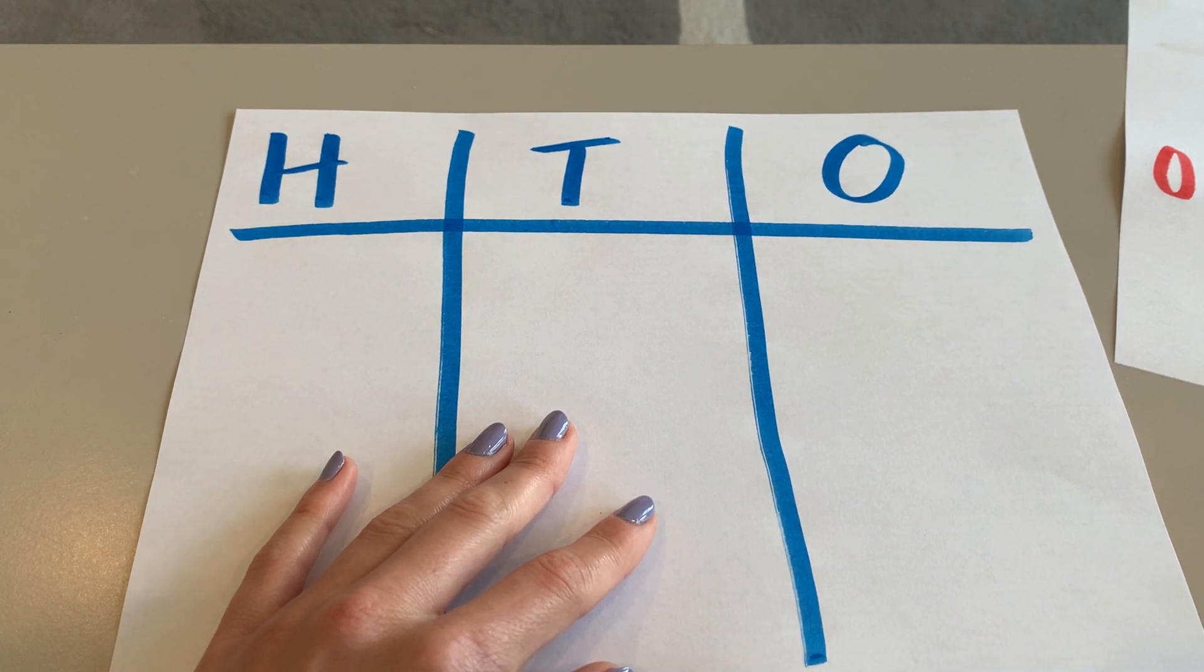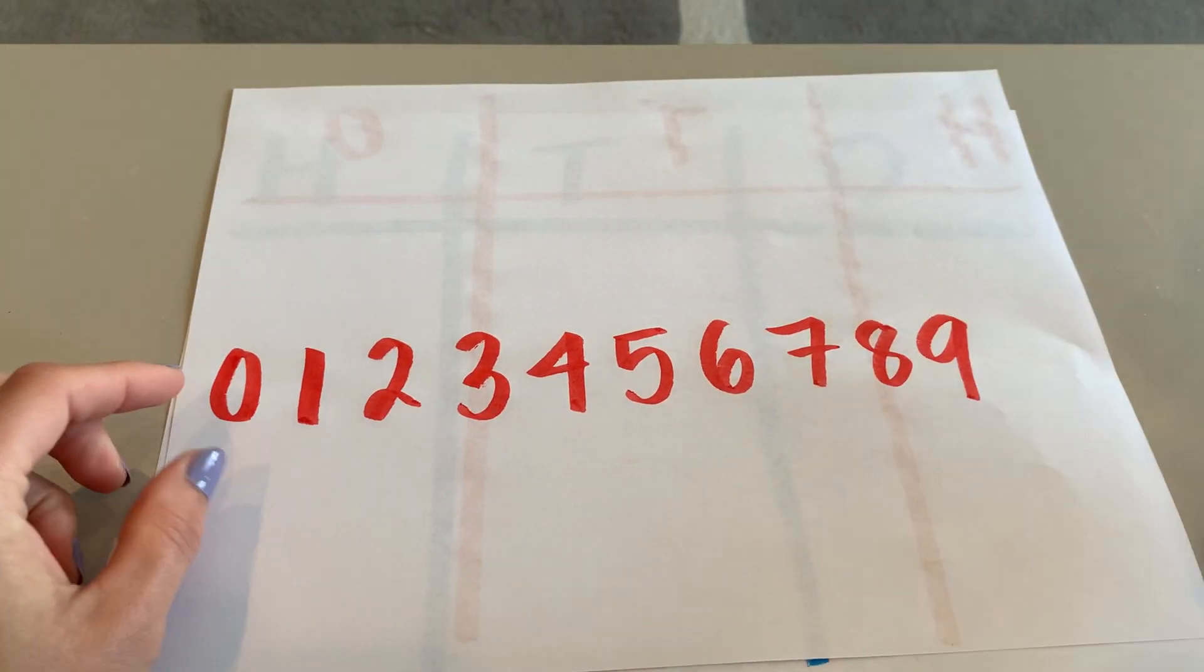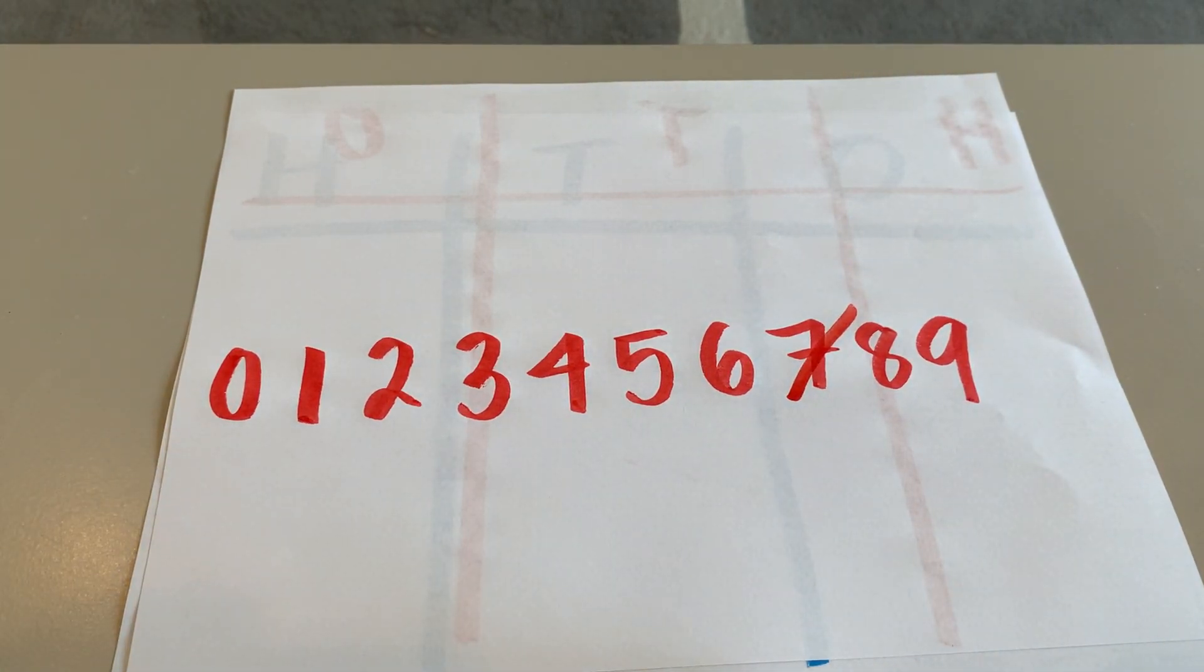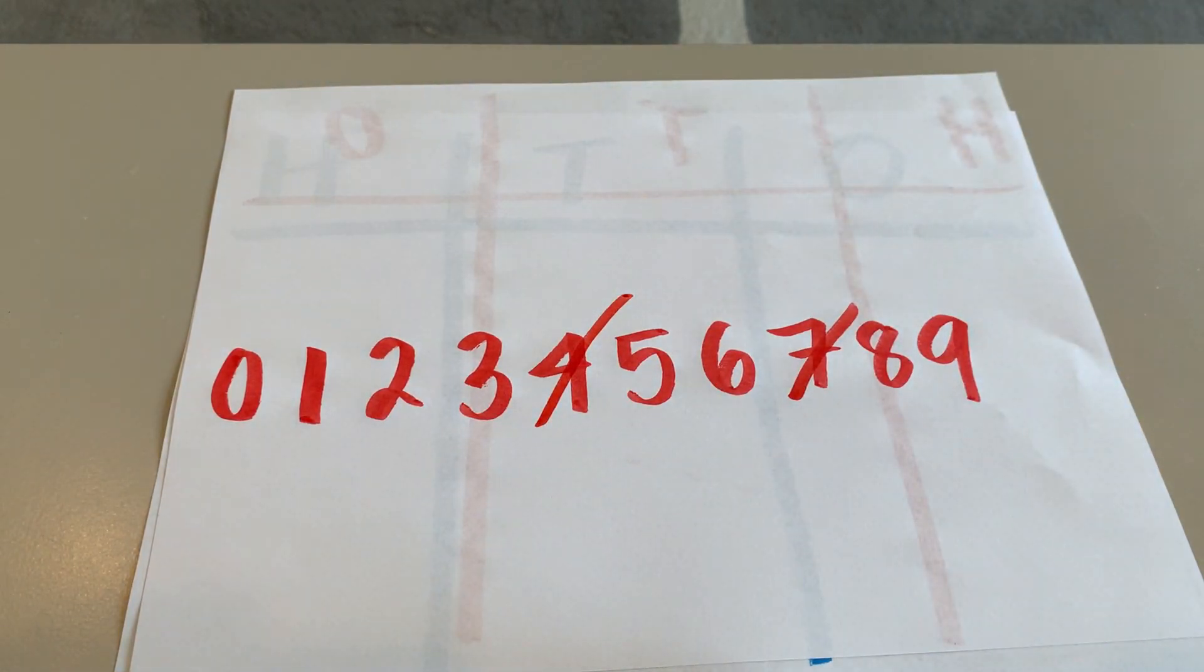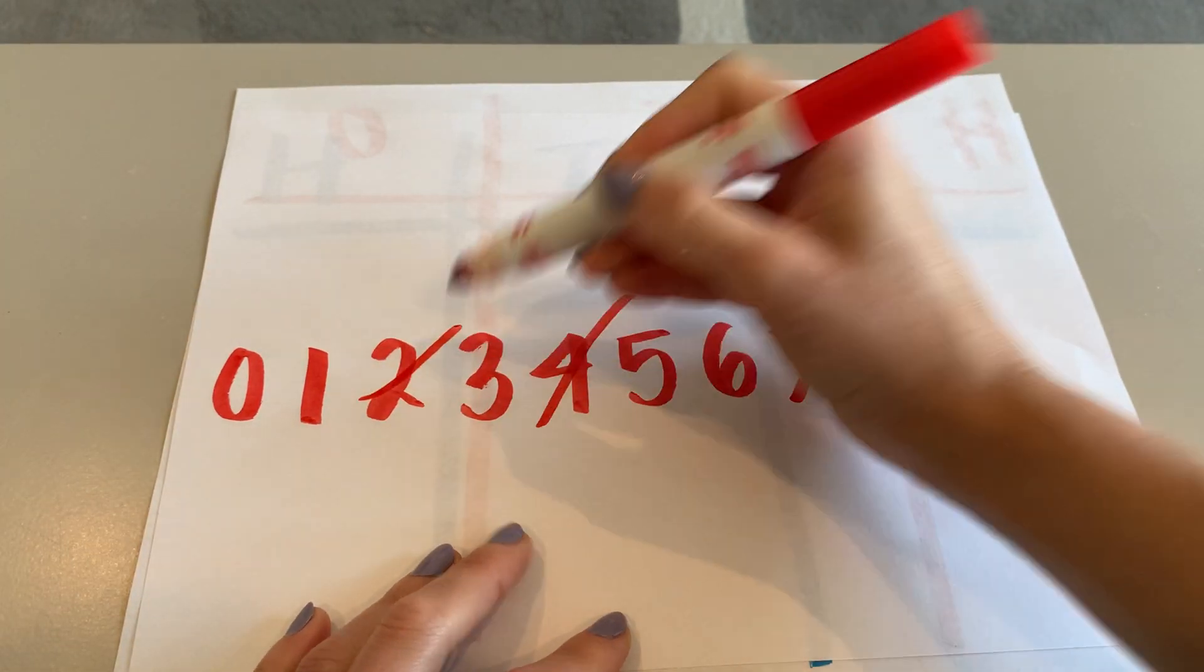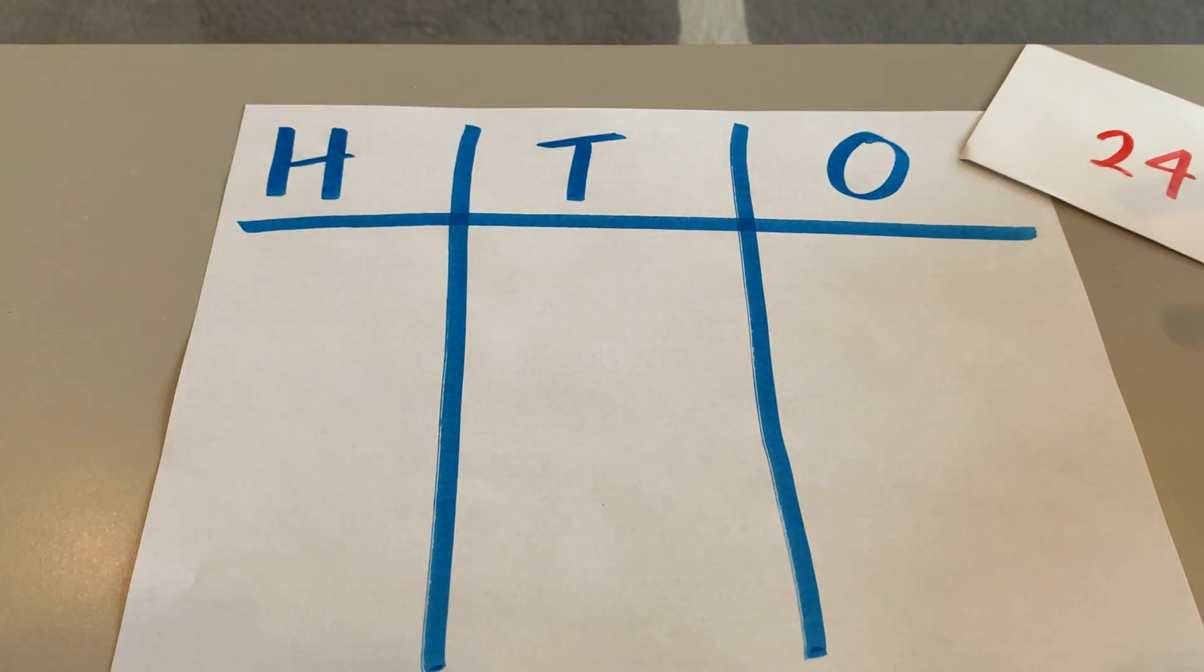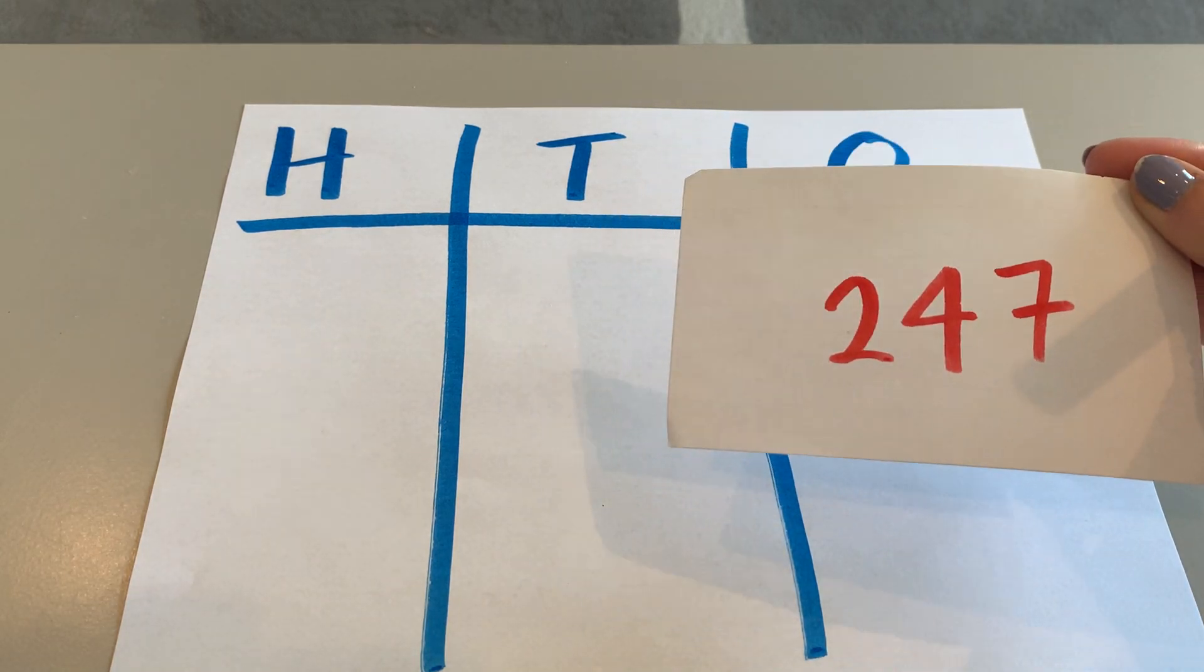Let's say I want to write a three digit number. I'm going to choose seven for my ones, four for my tens, and two for my hundreds. So now I have the number 247.